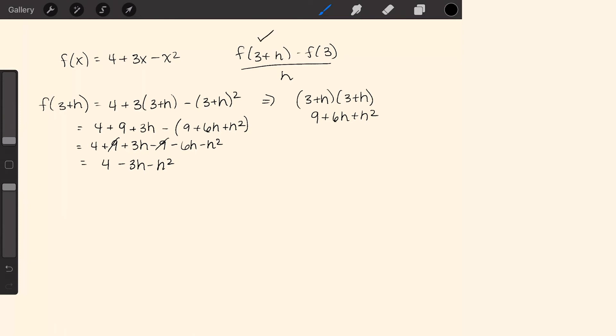So we did that piece. Now we need to evaluate f of 3, which will just give us a number. 4 plus 3 times 3 minus 3 squared equals 4 plus 9 minus 9 equals 4.